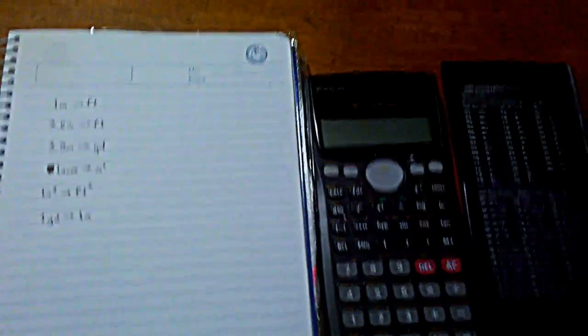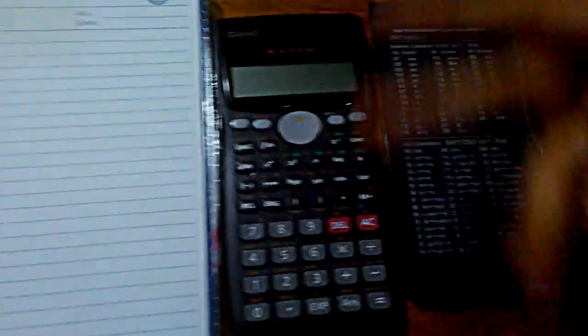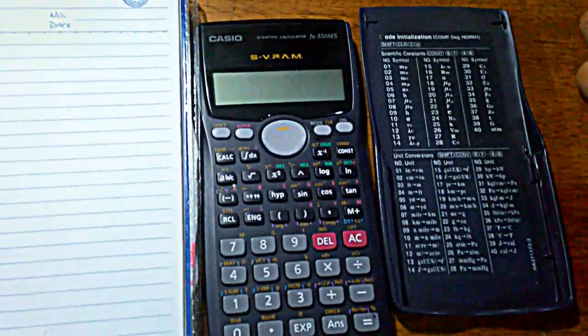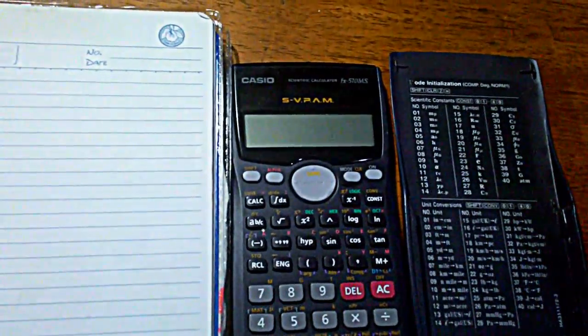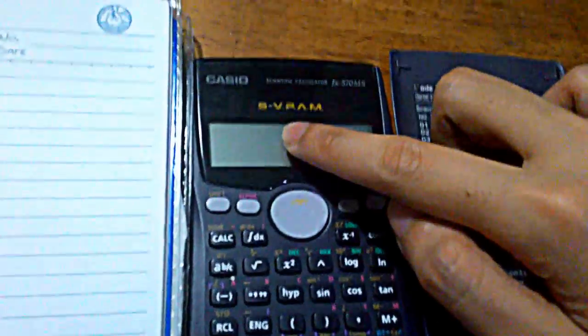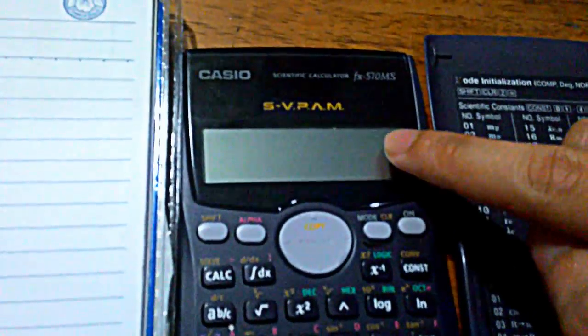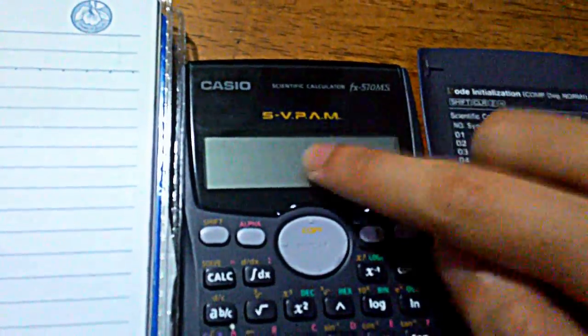Okay then, so assuming you already have your calculator, we'll just go through some of the possible conversions. This is just really a walkthrough of how you can use your conversion function in the calculator. So I have this particular calculator, Casio model FX570MS SVPAM.